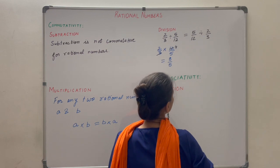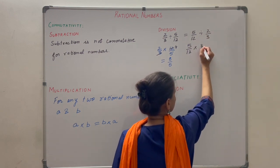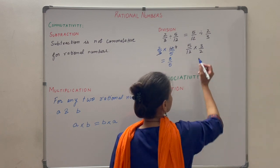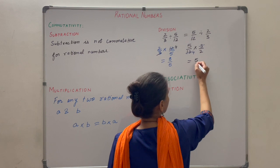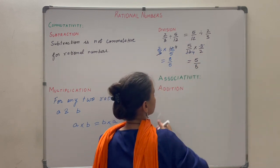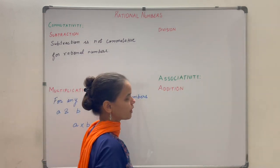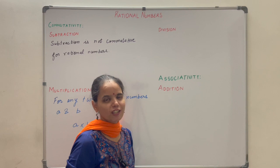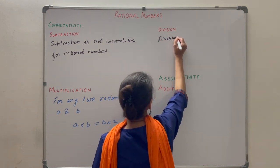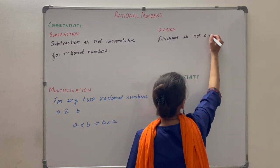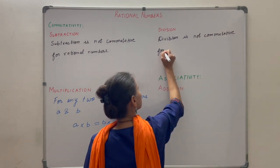Now solving the right side: 5 by 12, change division to multiplication, take the reciprocal of 2 by 3 to get 3 by 2. Cancel 3 and 12 to get 4, so numerator is 5 into 1 equals 5 and denominator is 4 into 2 equals 8, giving 5 by 8. Clearly 8 by 5 is not equal to 5 by 8, so division is not commutative for rational numbers.